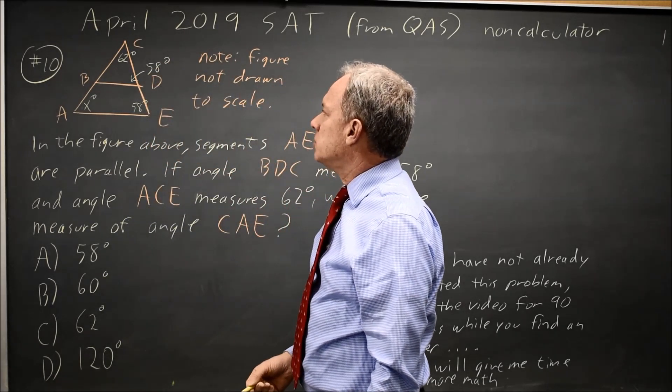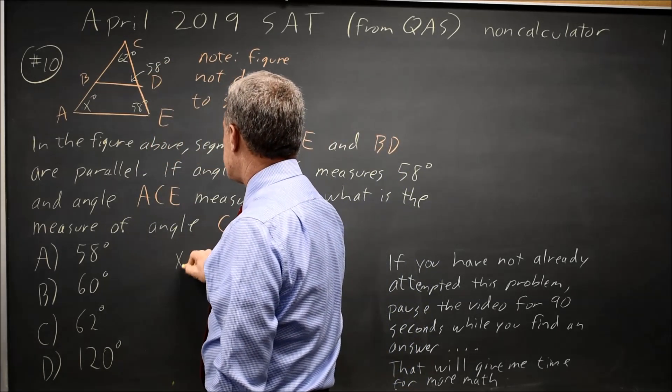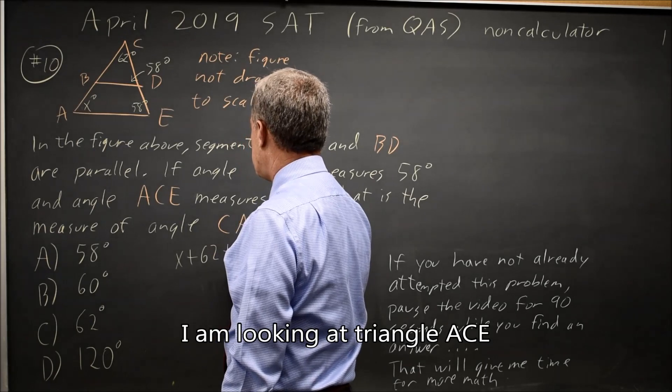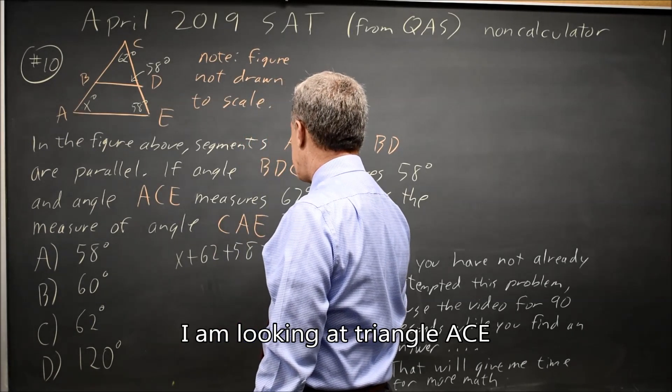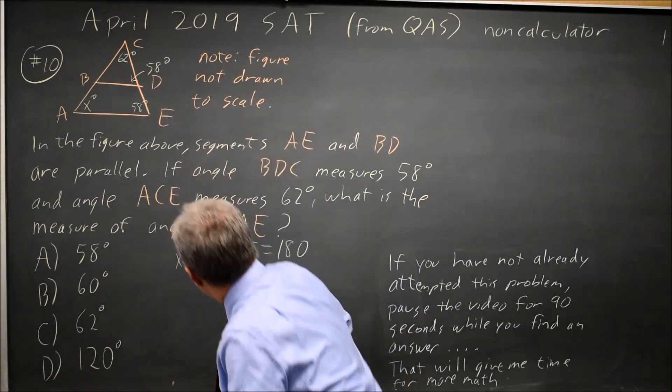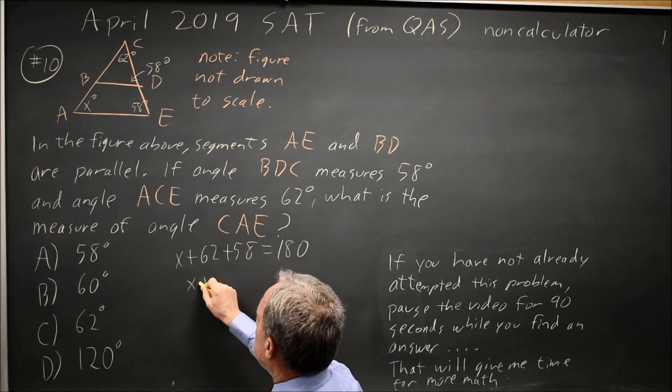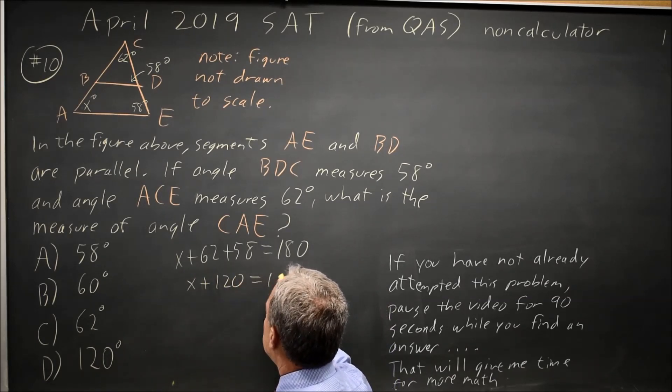The angles of the triangle add up to 180, so X plus 62 plus 58 equals 180. 62 plus 58 is 120, so X plus 120 equals 180.